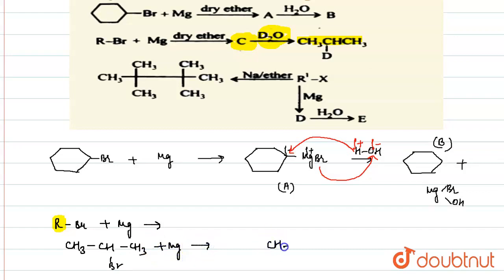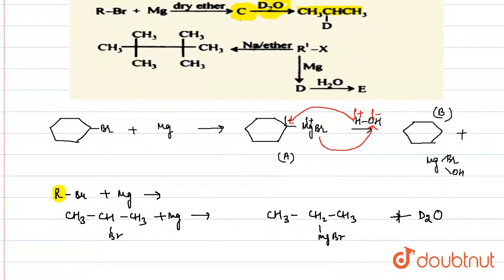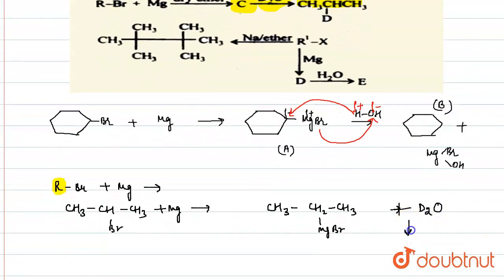Br plus magnesium. In this group, when we add magnesium in the presence of dry ether, then formation of MgBr takes place. And when we add D2O, then formation of the last group, which is shown, occurs. So accordingly, this will be our C group.